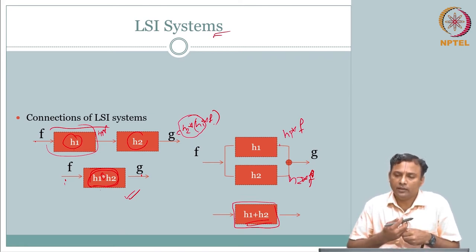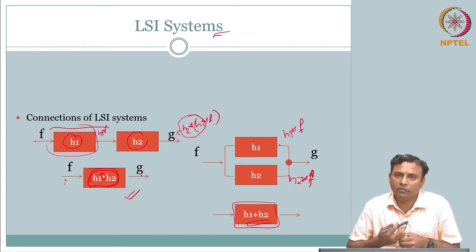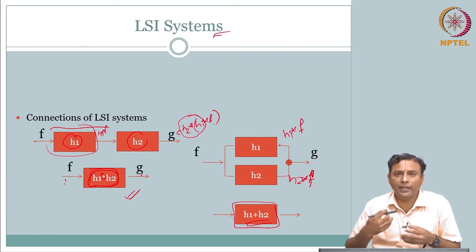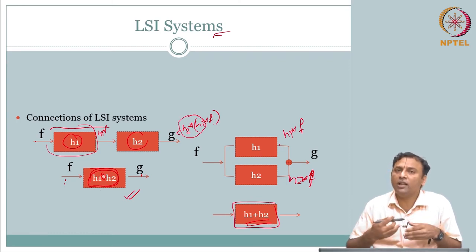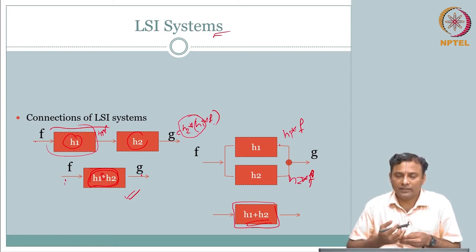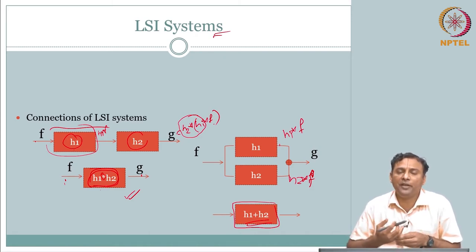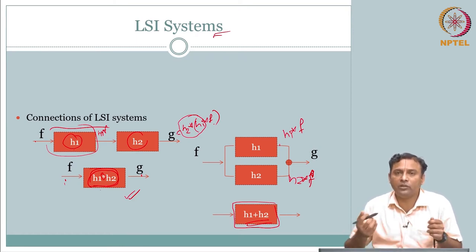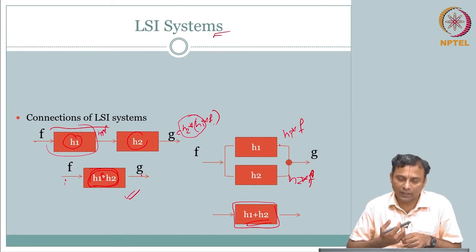There are other ways through which we could analyze system properties. If you recall your 1D systems analysis, we used to call it time domain analysis or time series. You have a signal with the independent variable being time — you can analyze it in the time domain or capture the signal in the frequency domain. An important transform that comes in is the Fourier transform.